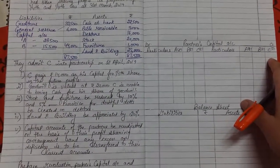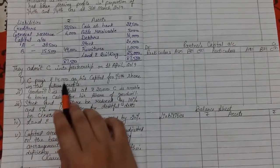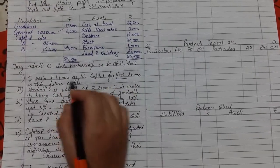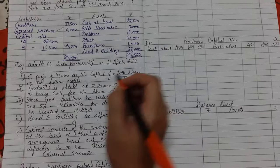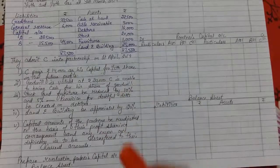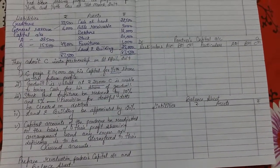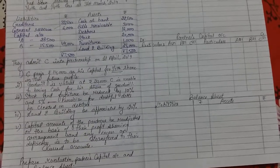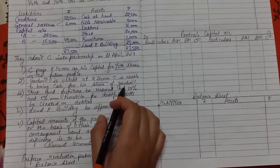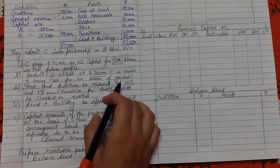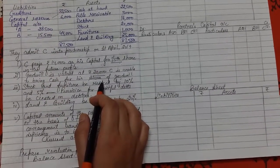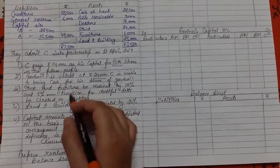They admit C into the partnership on 1st April 2019. C pays 14,000 as his capital for one-fifth share, bringing 14,000 as capital and his share is one-fifth. Goodwill is valued at 20,000 - this is the whole firm's goodwill, not just the partner's goodwill. She is unable to bring cash for his share of goodwill, so the new partner could not bring the goodwill amount due.